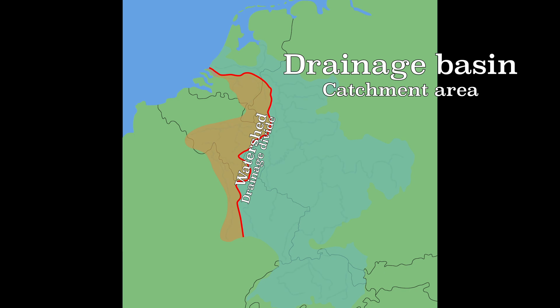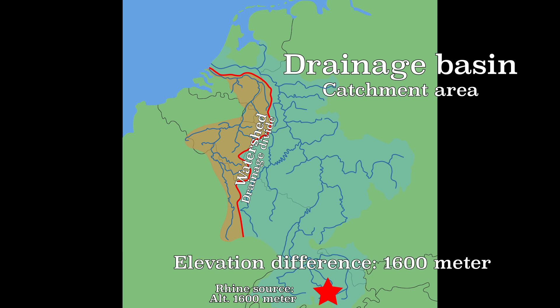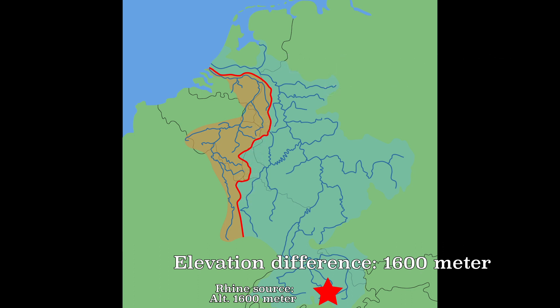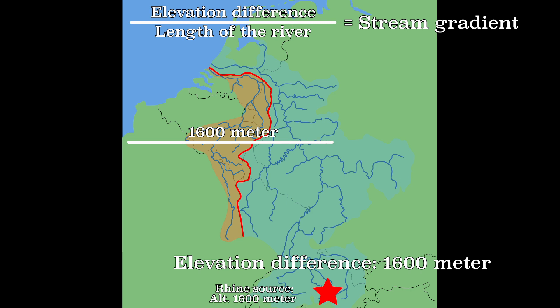The Rhine starts in the mountains in Switzerland at an altitude of 1600 meters. Because the river ends at sea level, the difference in elevation is 1600 meters. However, the decline per section of the river varies greatly. This is calculated using the stream gradient: divide the difference in height by the length of that part of the river. The difference in altitude is 1600 meters and the length of the river is 1235 kilometers, so the stream gradient is 1600 divided by 1235, which equals 1.3.